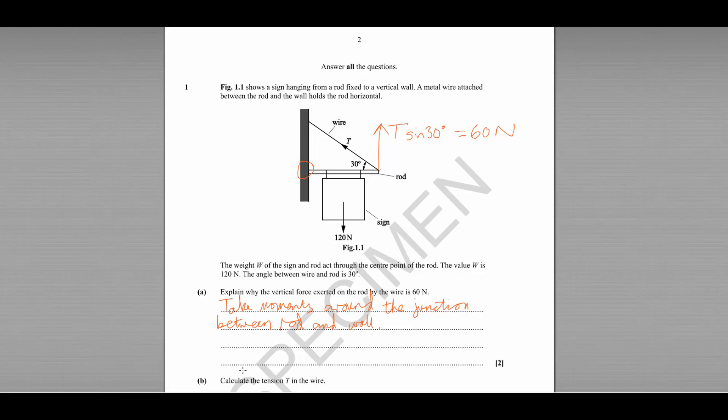Take moments around the junction between rod and wall. Now we don't know the length of the rod but that doesn't matter. So we know that our clockwise moments are going to be equal to our anti-clockwise moments. Clockwise we have one force acting which is this 120 newton force here which would cause a clockwise turning motion around that point.